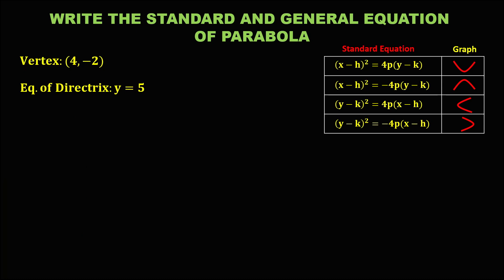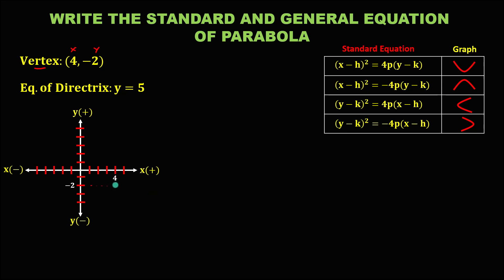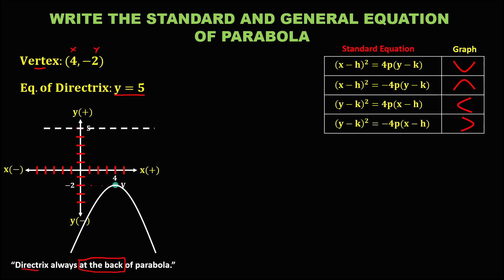For the next given problem, we need to graph. From the vertex, x is positive 4 and y is negative 2 — this is now the point of the vertex. From the equation of the directrix, y equals positive 5 — this is now the line for the directrix. In the parabola, the directrix is always at the back of the parabola. Therefore, this parabola opens downward.